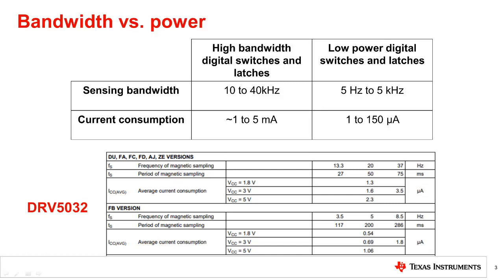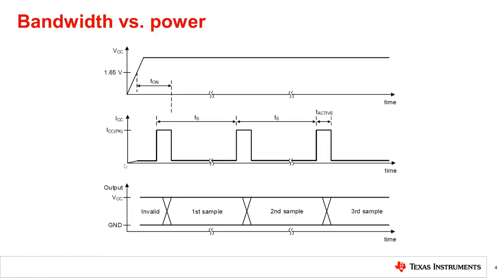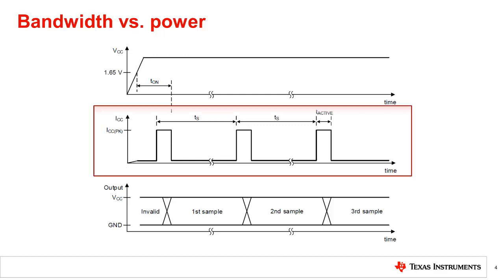For applications that have fast-moving magnets, if the sensor's sampling rate is too slow, it could miss the magnet as it moves by. Low power Hall devices typically have an integrated oscillator that automatically power cycles the IC. This oscillator periodically wakes up the IC to take a new magnetic sample and update the output, then puts the IC back to sleep, resulting in an overall low average current consumption.